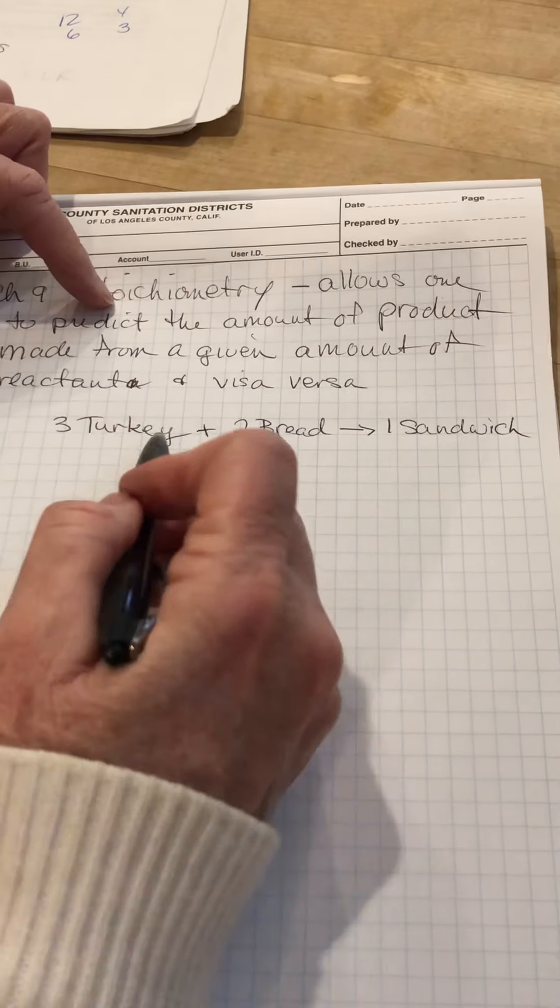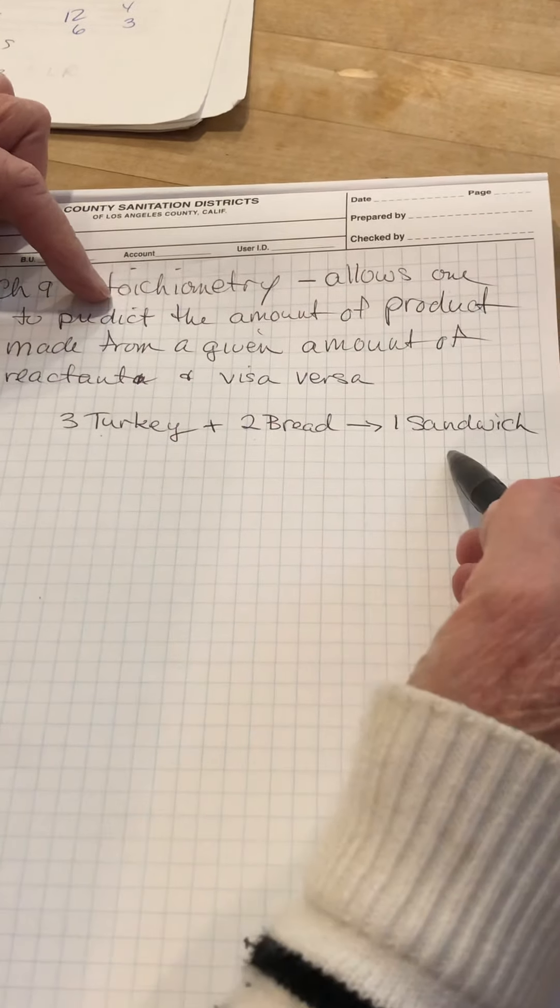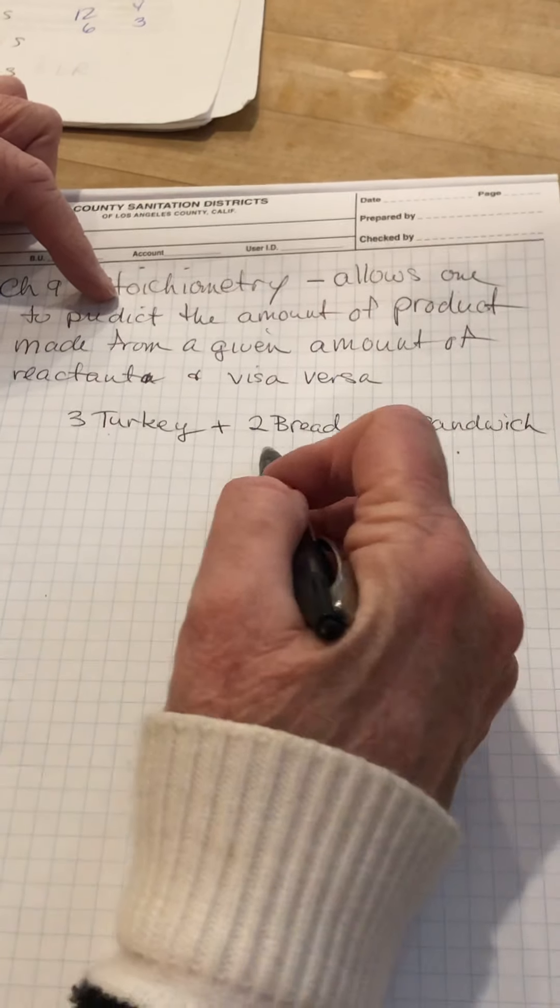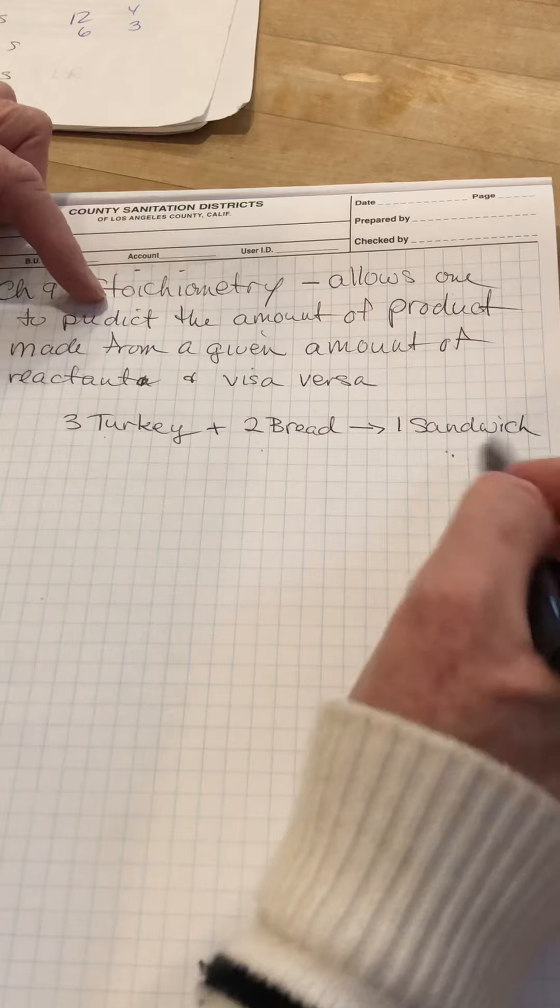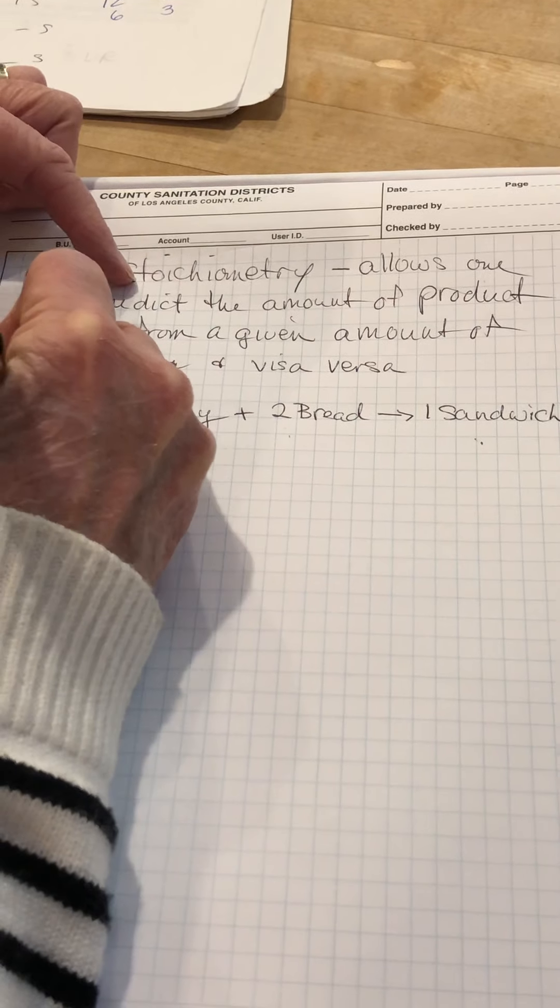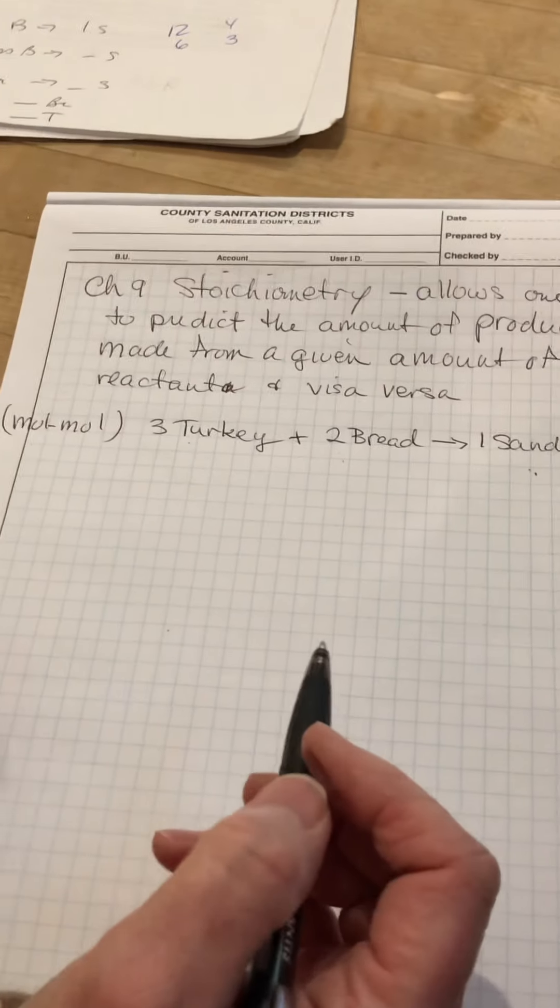And we're going to use this as a balanced equation for making a turkey sandwich. So, it would be three turkey plus two bread yields one sandwich. And this is very similar to what are called mole-to-mole calculations in your book.